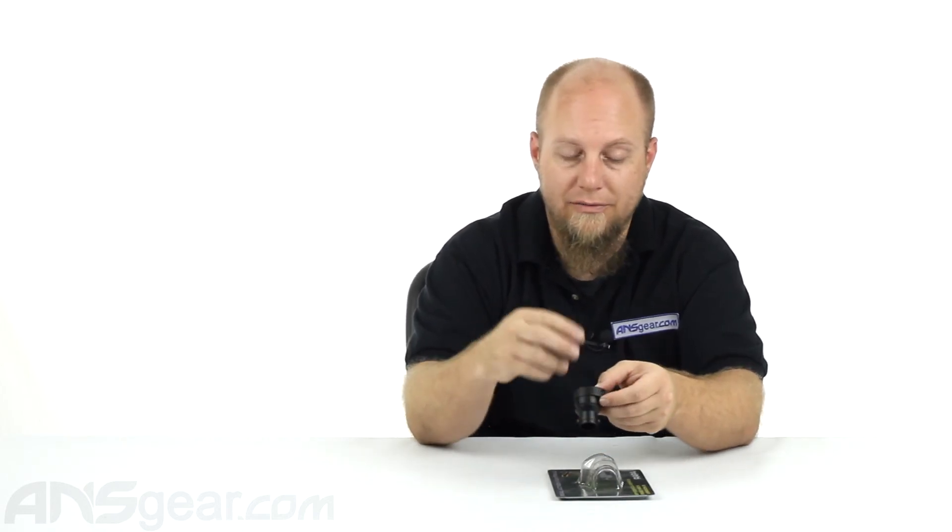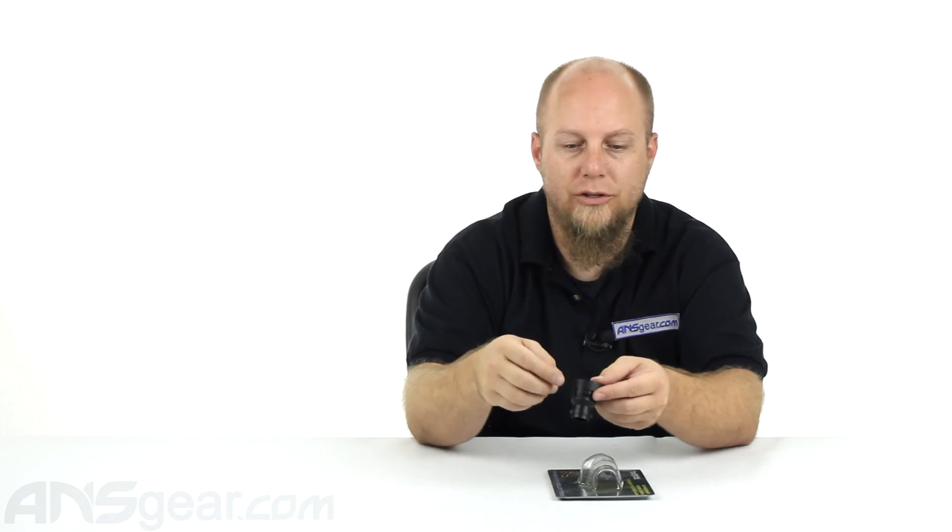This is the spider feed neck version B or the tabs version from RAP4. It's available through the website. Order yours now through ansgear.com.